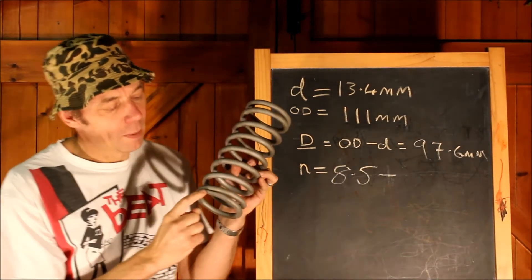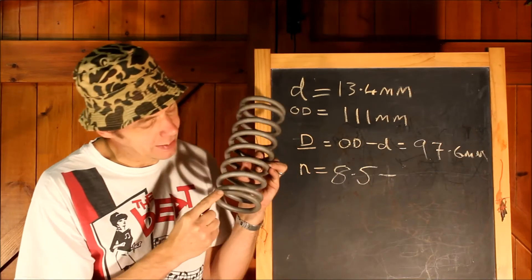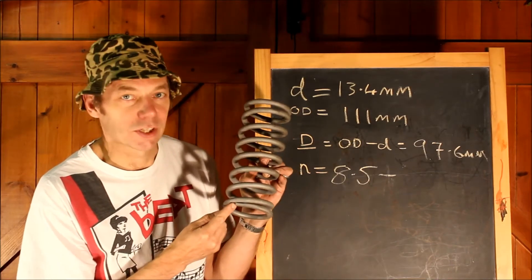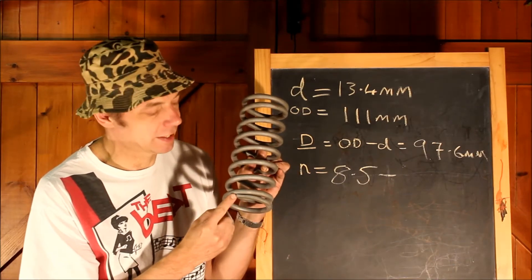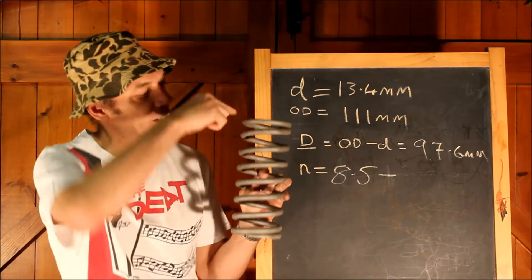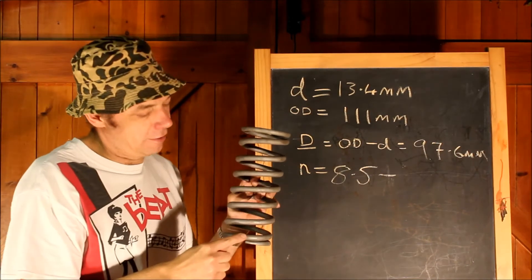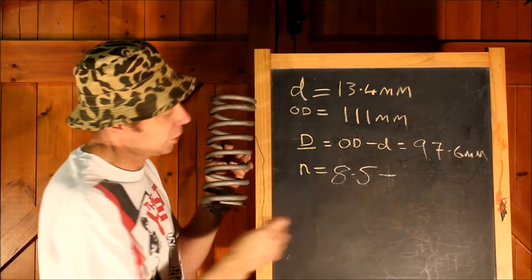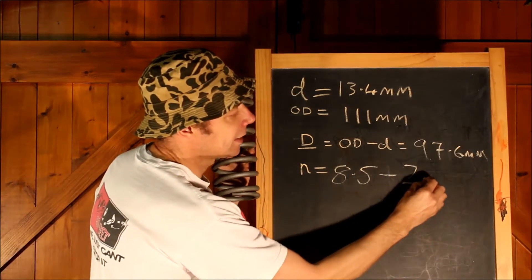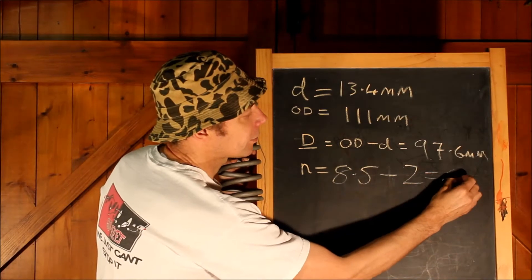But almost all suspension springs have what's called closed and ground ends like this. That means that this end, the closed and ground end, doesn't contribute to the spring at all, it's just a spring seat. So we need to subtract 2 from our total number of coils for these 2 closed and ground ends which aren't contributing to the springing at all. So that's 8 and a half total coils minus the 2 closed and ground ends, gives us a number of active coils of 6 and a half.